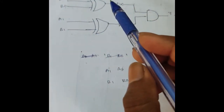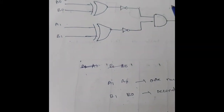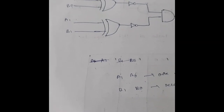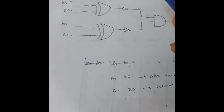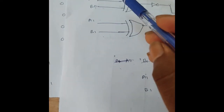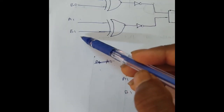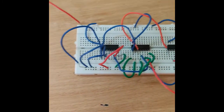This is the circuit diagram of the 2-bit comparator circuit. For the comparator, the outputs have 3 conditions: A less than B, A equal to B, and A greater than B. The circuit diagram shown here is only for the A equal to B condition. The 4 inputs are A0, B0, A1, B1, and the output is Y.